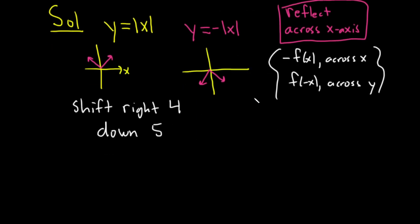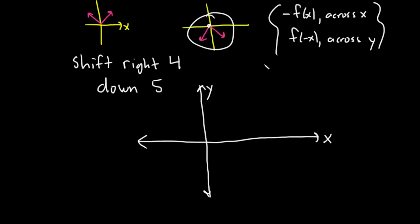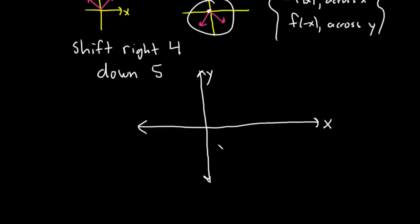So now all we're going to do is take this upside-down v and shift it right 4 and down 5. Let's draw the y-axis and the x-axis. From the origin, we're going to go right 4 and down 5. 1, 2, 3, 4... and 1, 2, 3, 4, 5. I'll put a dot right here and then draw the upside-down v. I'm not going to worry about finding the intercepts, though you could if you wanted to.